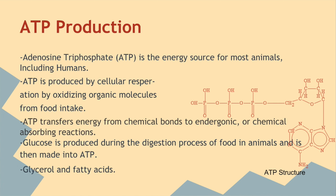Adenosine triphosphate is the main energy source for most animals and humans. It's produced by cellular respiration by oxidizing organic molecules from food intake. It transfers energy from chemical bonds into endothermic or chemical-absorbing reactions, and it's produced by the digestion of certain foods. Some of the most important molecules in ATP production are glycerol and fatty acids. On the right is a diagram of what the ATP structure looks like, including its phosphate groups.